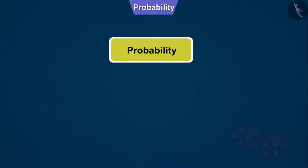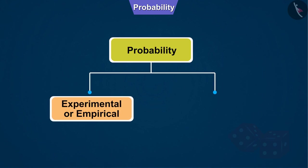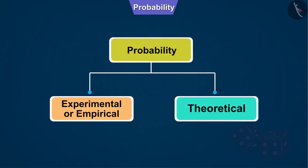Basically, there are two types of probability: Experimental or Empirical, and Theoretical, based on which there can be two different answers for the same event. Let's see an example to understand it better.